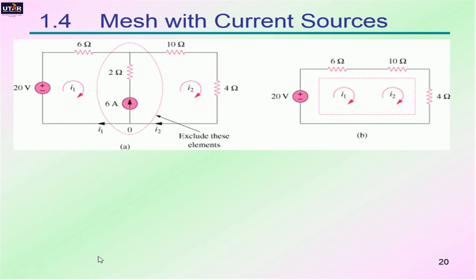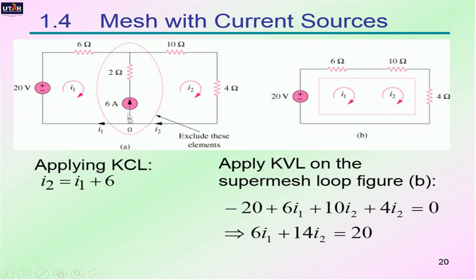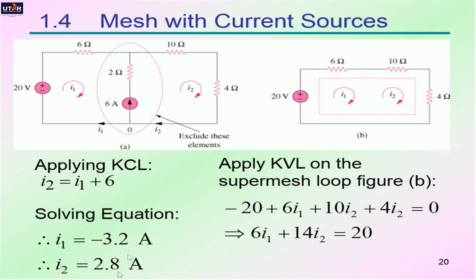We solve the super mesh circuit separately. First, we apply KVL on the super mesh to obtain one set of equations. Then we apply KCL on the branch containing the current source — I2 is flowing into the branch while 6 ampere and I1 are flowing out, giving I2 equals 2I1 plus 6. With two variables and two sets of equations, we find I1 equals negative 3.2 ampere and I2 equals 2.8 ampere.